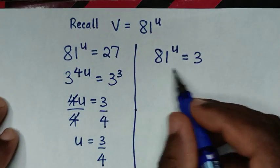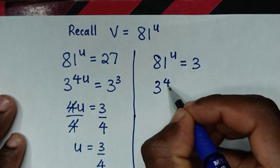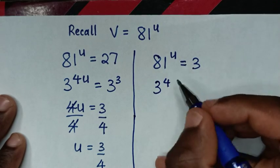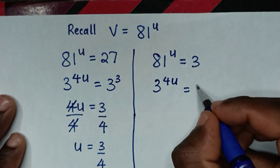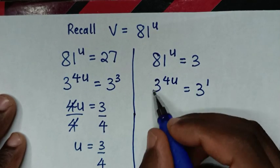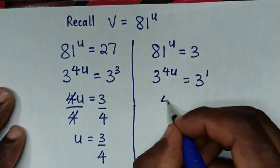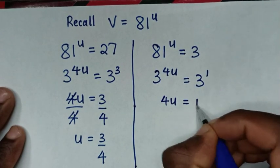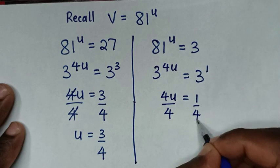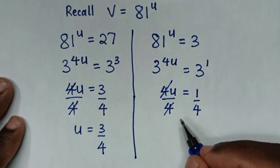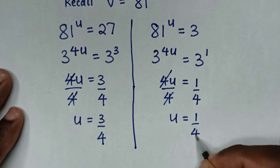For the second solution: 81^u = 3. Since 81 = 3⁴ and 3 = 3¹, we get 3^(4u) = 3¹. Comparing powers, 4u = 1, so dividing both sides by 4 gives u = 1/4.